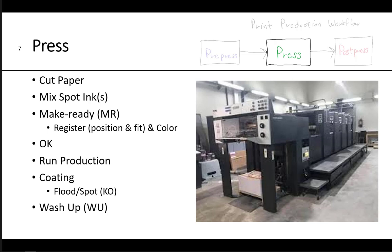Now we're into the press room. You have to cut paper, mix any spot inks, and make ready to press — getting the register (position and fit) and color. Once you get your color okay and approval, you start running production. During production you may have to do some coating — that could be a flood coat overall, or a spot localized coating where you need a knockout. And then of course you do your wash up. The press room is at the center, the heart of any printing company, because it has the most expensive equipment, the most complicated processes, and you're paying your people the most. This is where you make or break profitability.